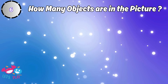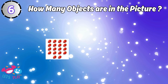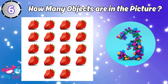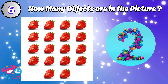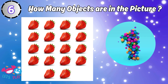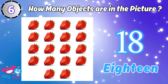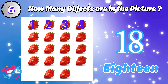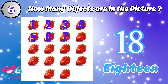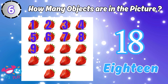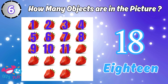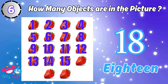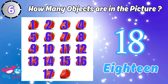How many objects are in the picture? Eighteen. One, two, three, four, five, six, seven, eight, nine, ten, eleven, twelve, thirteen, fourteen, fifteen, sixteen, seventeen, eighteen.